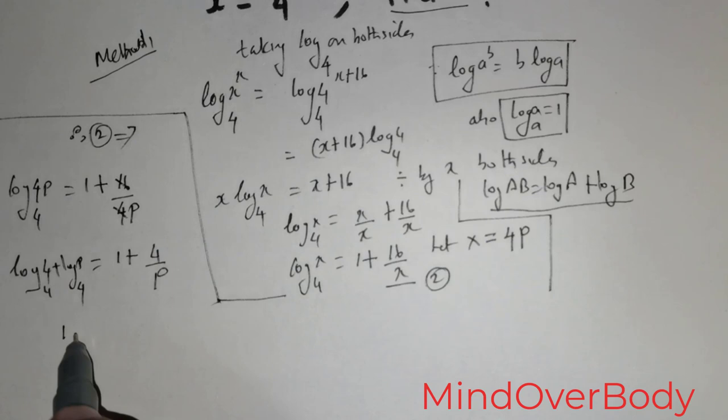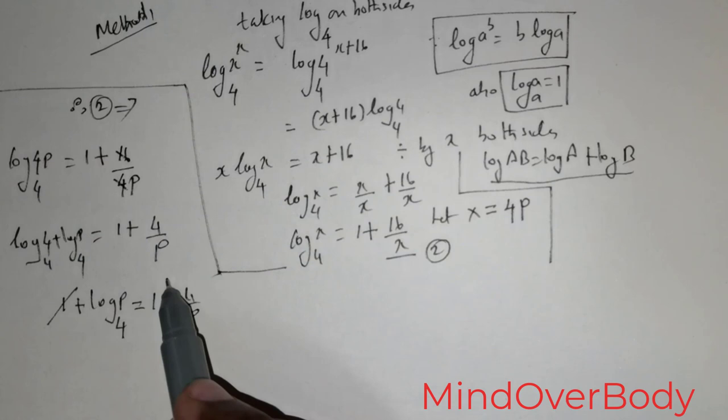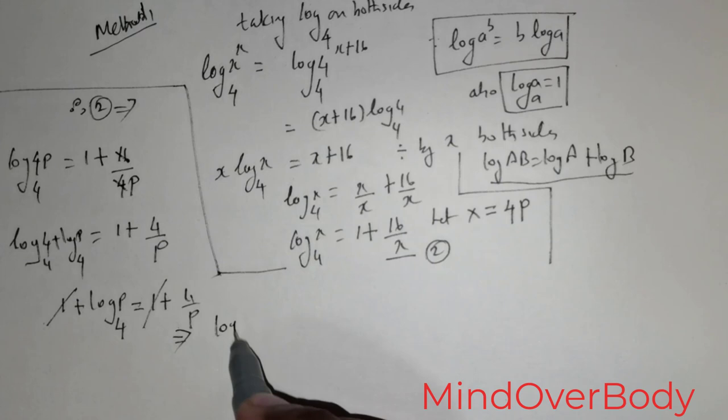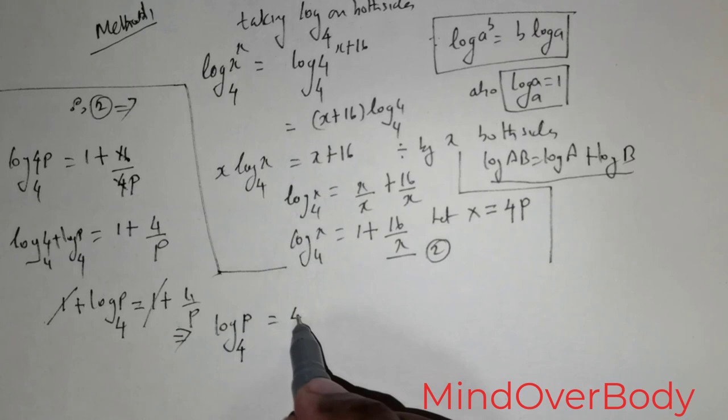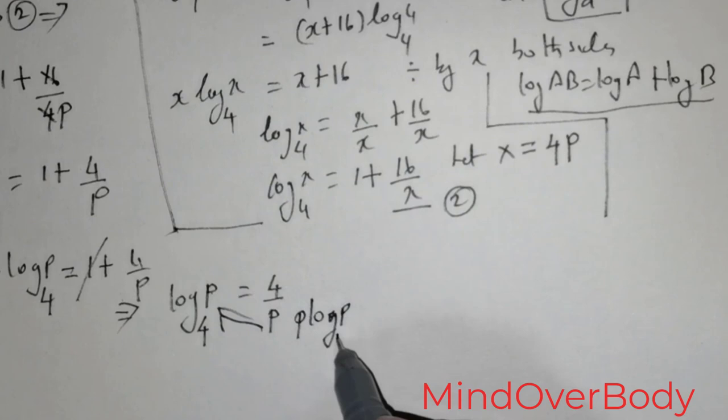Clearly log of 4 to the base 4 equals 1, so I have 1 plus log of p to the base 4 equals 1 plus 4 over p. The 1s on both sides cancel, giving log of p to the base 4 equals 4 over p. Cross-multiplying gives p times log of p to the base 4 equals 4.